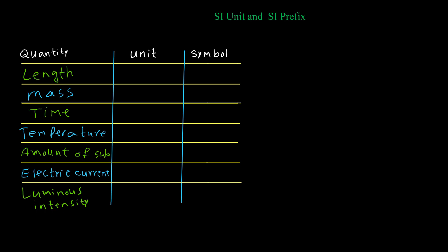In this video I'm going to talk about SI units and SI prefixes. SI unit is an international unit for quantity and it's made up based on seven major quantities that you can see in this table.